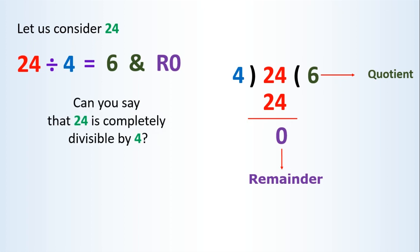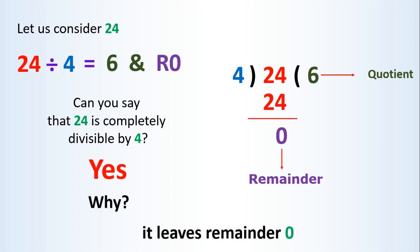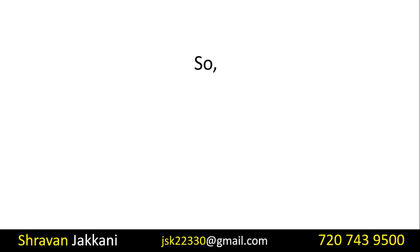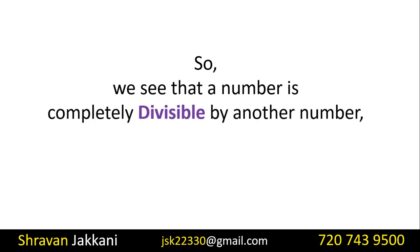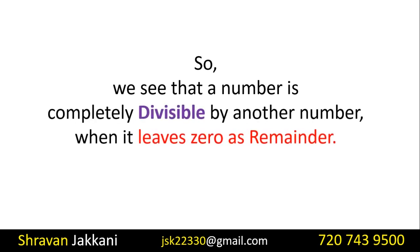If the remainder is zero when we divide, then the number is completely divisible. If there is any remainder left, then the number is not completely divisible. So, this is the concept of Divisibility.